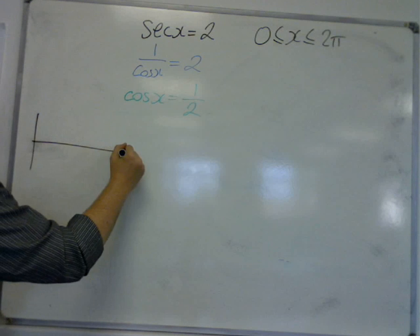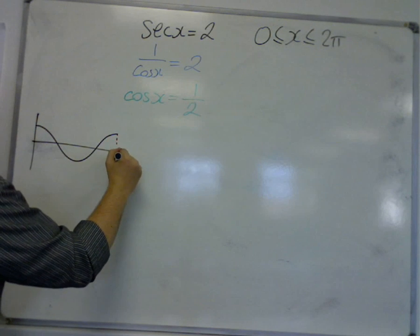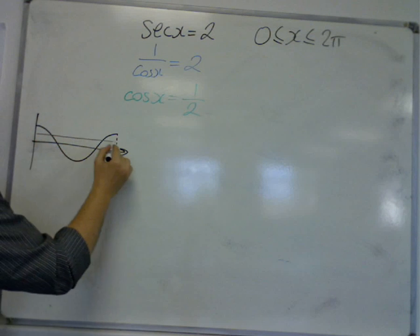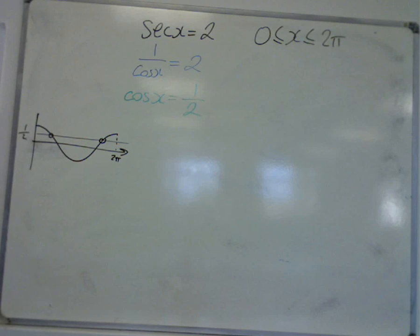Cos looks something like this between 0 and 2π, and we're looking at a half. We can see that there are going to be two intersection points.